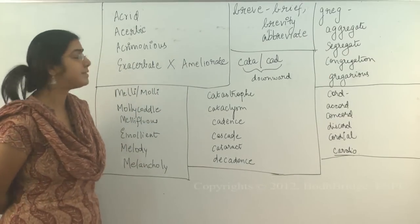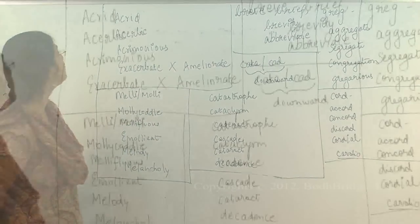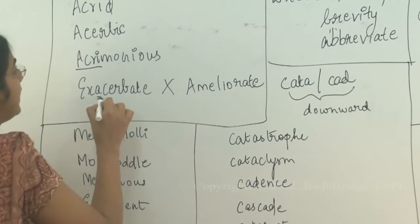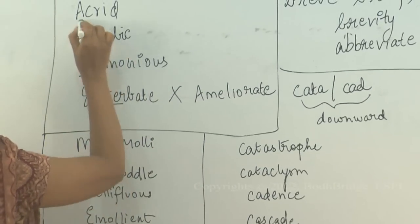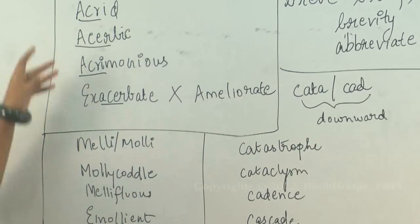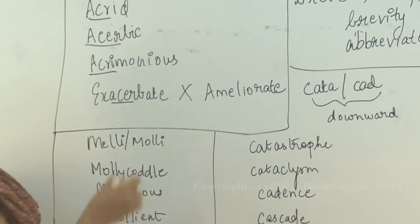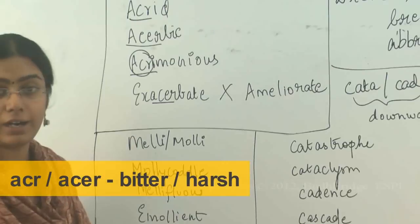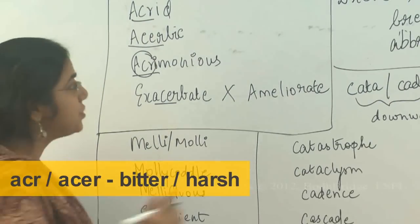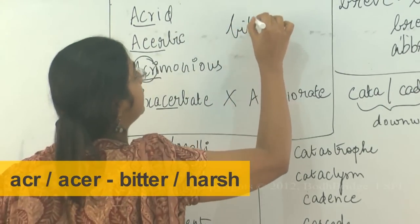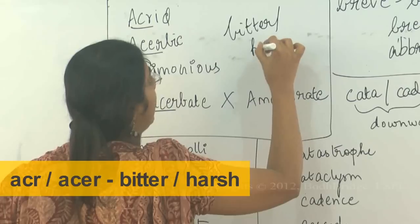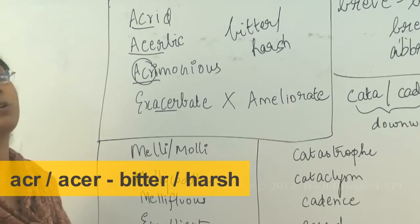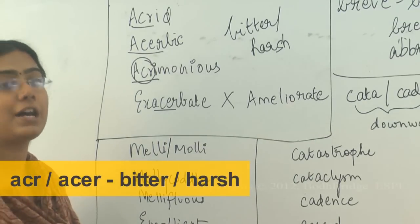Look into these sets of words. Look into the first set now: acrid, acerbic, acrimonious, exacerbate. These words — wherever you have ACR or ACER — have to do with bitter or harsh. ACRI is the root word for bitter or harsh.